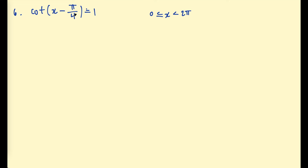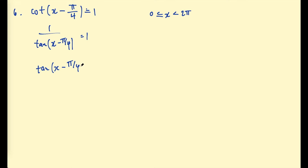Example 5: cotangent of (x minus π/4) equals 1. This is straightforward — cotangent is 1 over tan, so we write 1 over tan(x − π/4) equals 1, which means tan(x − π/4) must equal 1. When tan of something equals 1, that something is π/4 — our reference angle is π/4.